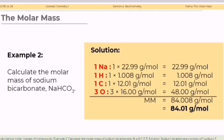Solution. Sodium bicarbonate consists of one sodium, one hydrogen, one carbon, and three oxygen atoms. Multiplying the quantity by the molar mass of each element, we have 1 times 22.99 grams per mole for sodium, 1 times 1.008 grams per mole for hydrogen, 1 times 12.01 grams per mole for carbon, and 3 times 16.00 grams per mole for oxygen.